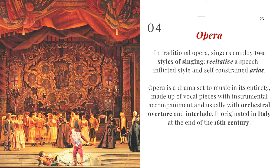In traditional opera, singers employ two styles of singing: recitative, which is a speech-inflected style, and self-contained arias. An opera is made up of a recitative part and an aria. The recitative is where the actor or actress recites their lines in a half-spoken manner, while the aria is a solo piece where the performer sings their dialogue alone. Usually what is remembered most from an opera are the arias — the famous solo parts of the actors and actresses.